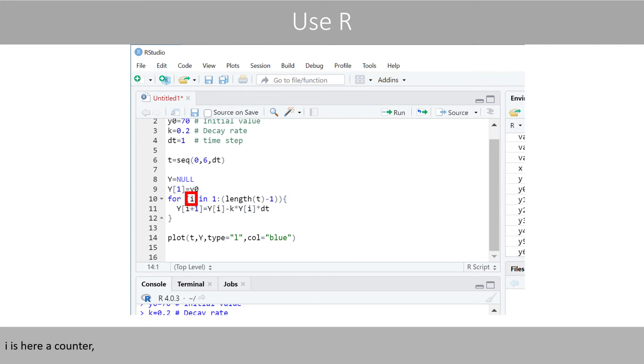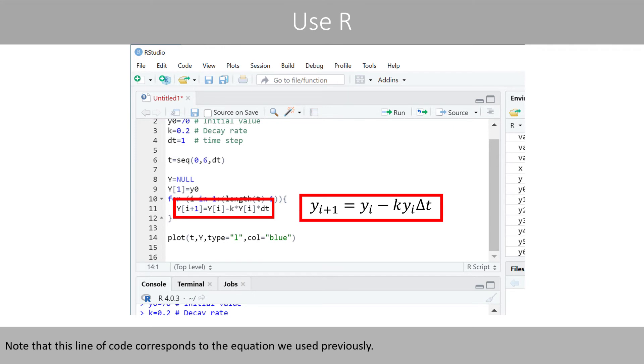i is here a counter that starts at 1 and will be increased by 1 for every iteration until it is equal to 6, which is the length of vector t minus 1. Note that this line of code represents the equation we used previously.